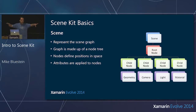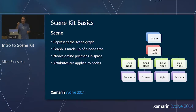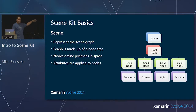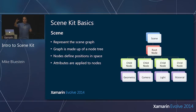You build up this hierarchy of nodes. A node doesn't put anything onto the screen — it represents a position in 3D space. The way you have things appear within the scene is by attaching things to nodes, such as geometry — your 3D geometry — and materials to make the geometry appear a certain way.